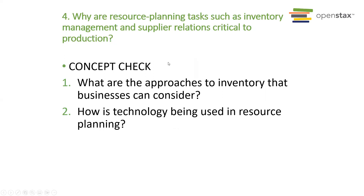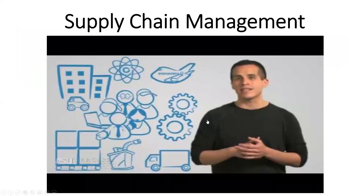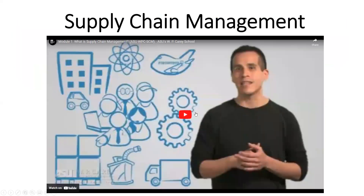Section four asks: why are resource planning tasks such as inventory management and supply relations critical to production? These are two concept check questions to consider when reading this section in chapter 10. Here's a link to a video on YouTube about supply chain management — let's take a look.